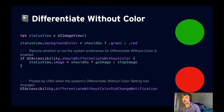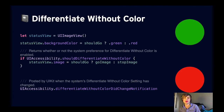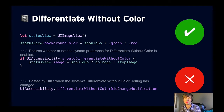Differentiate without color replaces UI items that rely solely on color to convey information. For example, a view that's green for 'go' and red for 'stop' — users with color blindness might not be able to tell the difference. To fix it, check UIAccessibility.shouldDifferentiateWithoutColor, then add an image with a checkmark or X to indicate the state without relying on color. There's also a notification version to subscribe to when the setting changes.